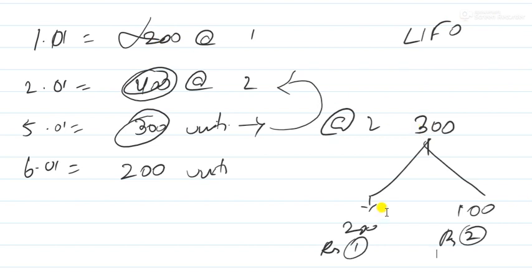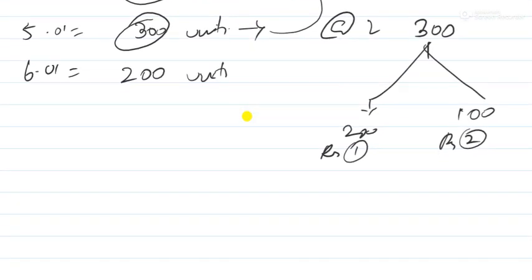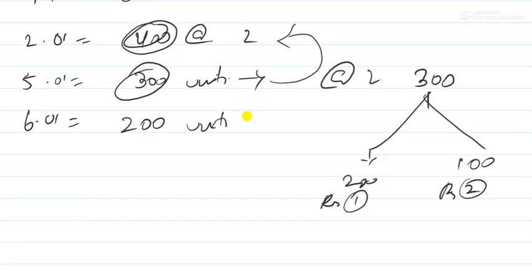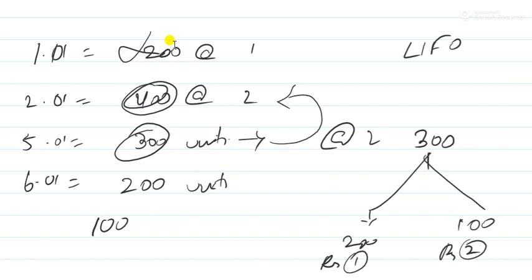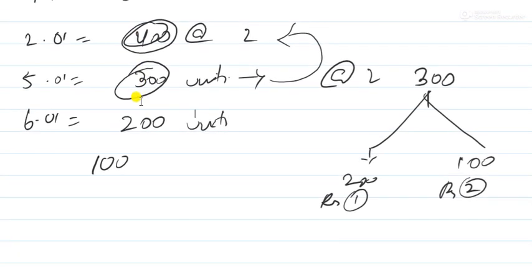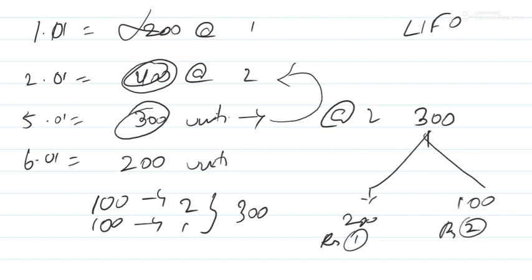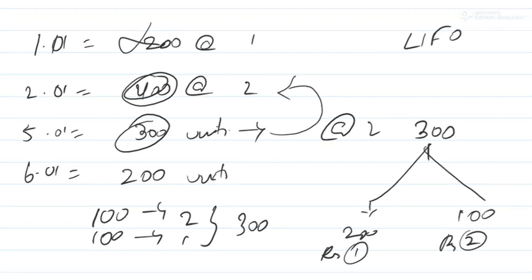If on 6th January I issue 200 more units, I take 100 units from the latest stock at 2 rupees and 100 units from the earlier stock at 1 rupee, totalling 300. This is the LIFO method. If you haven't understood, we'll solve an example and I hope you will understand.